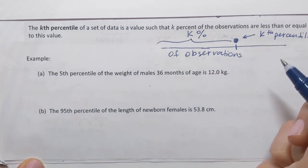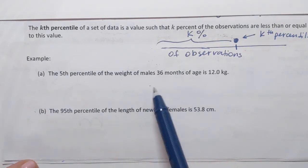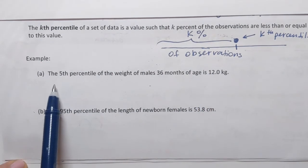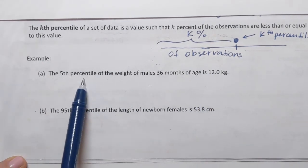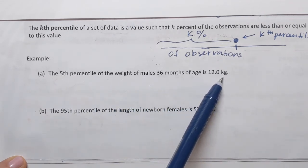So let's try two examples here and see if it's gonna help us to clarify this concept. In example A it says that the fifth percentile of the weight of males 36 months of age is 12 kilograms.